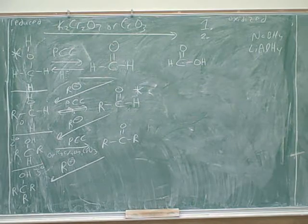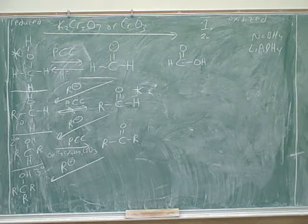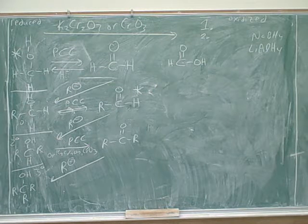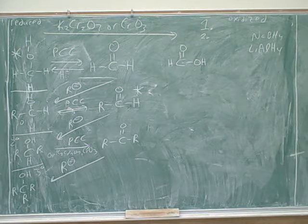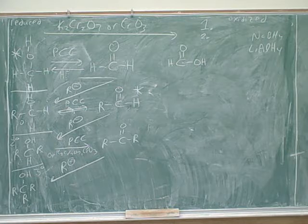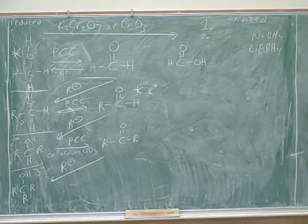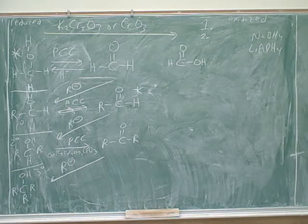If you look at the bottom of the handout, it covers the oxidizing agents that we talked about here. It also talks about the sources of H⁻: sodium borohydride and lithium aluminum hydride. Notice that lithium aluminum hydride has to be used separately from H₃O⁺. Sodium borohydride can be used at the same time as your protonator — sodium borohydride is a little bit different. And then there's the sources of R⁻ on the right, the Grignard and the alkyl lithium, and those have to be used separately from the H₃O⁺.